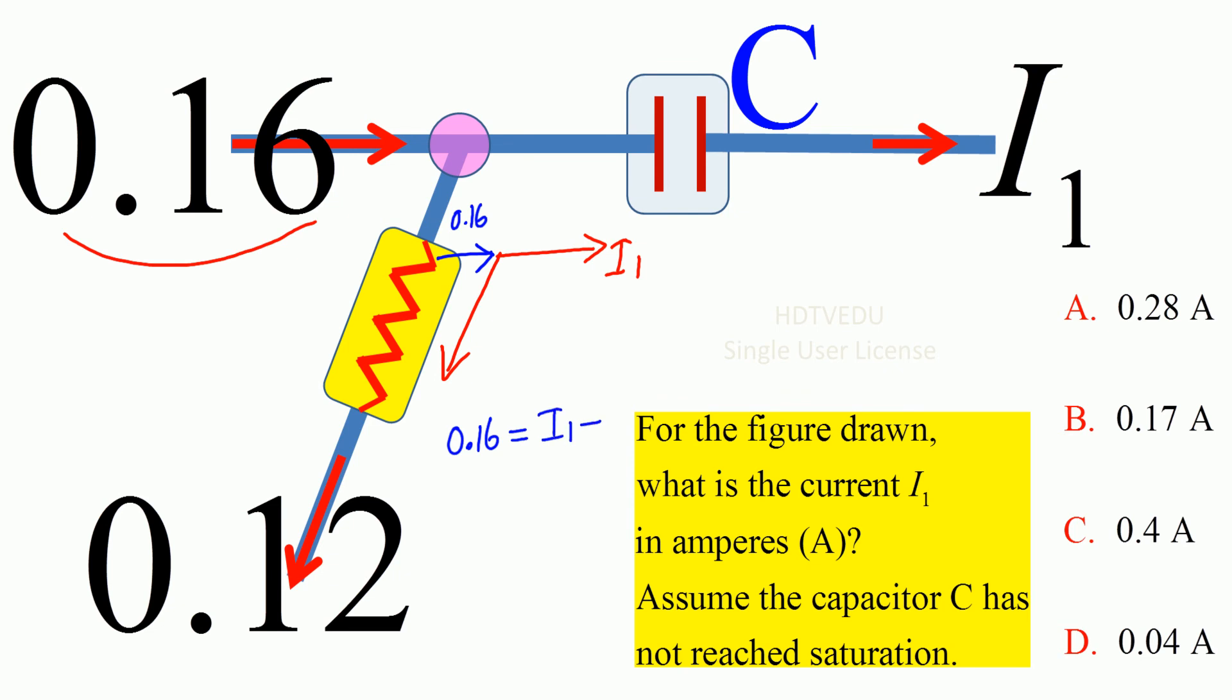Subtract 0.12 from both sides, so you get I1 is equal to 0.04 amperes. So current I1 is equal to 0.04 amperes.